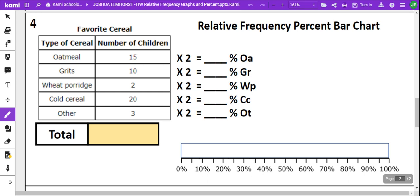So moving on to the back page or page 2, we're going to look at the frequency for favorite cereal. First, find your total.